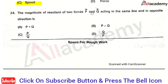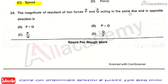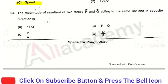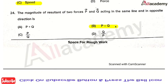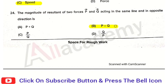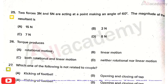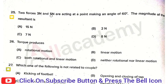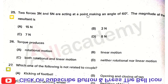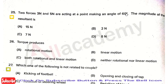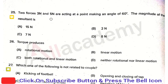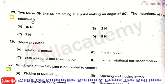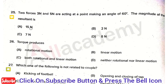The next question is: the magnitude of a resultant of two forces P and Q acting in the same line but in opposite directions. The right answer is option B, that is P minus Q. The next question: two forces of 3 newton and 5 newton are acting at a point making an angle of 60 degrees — the magnitude of the resultant is option 3, that is 7 newton.